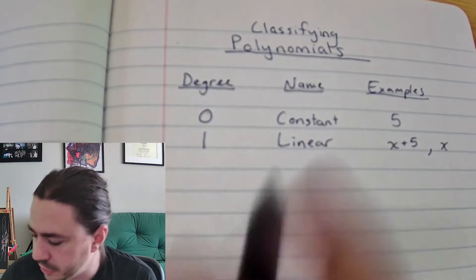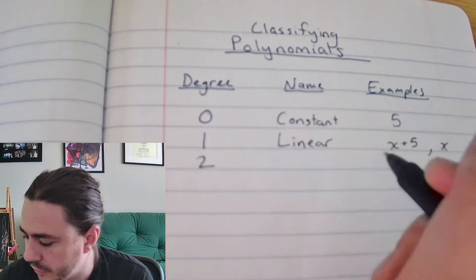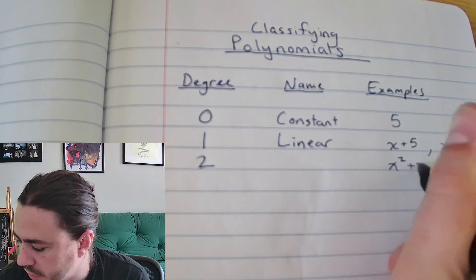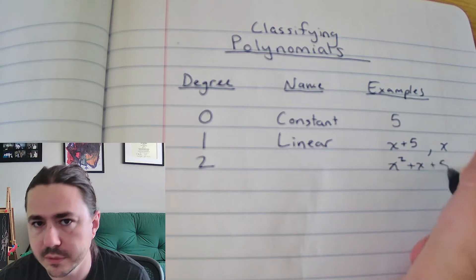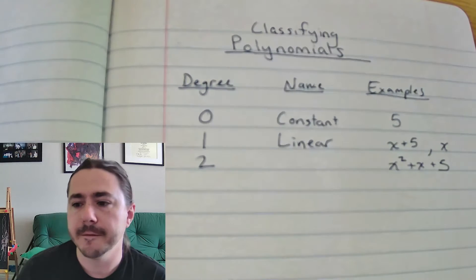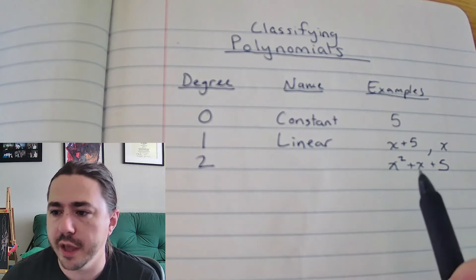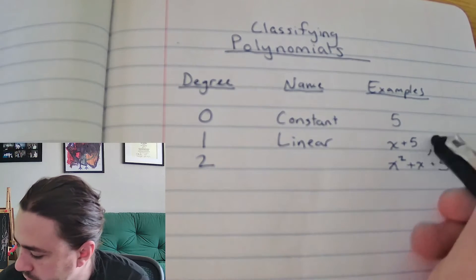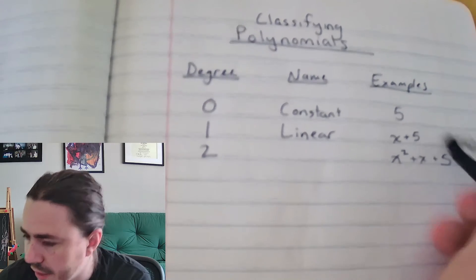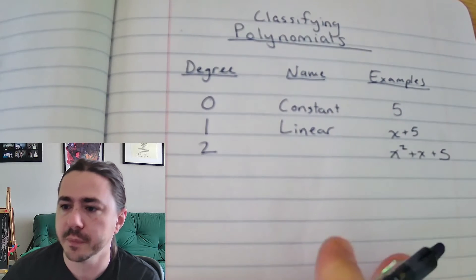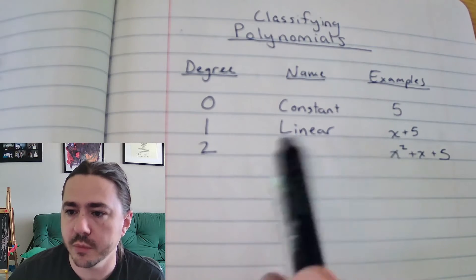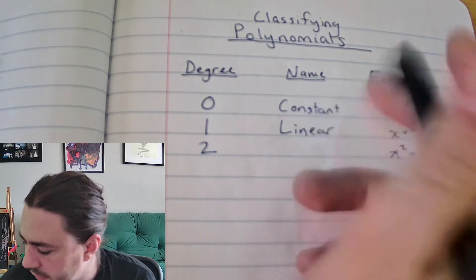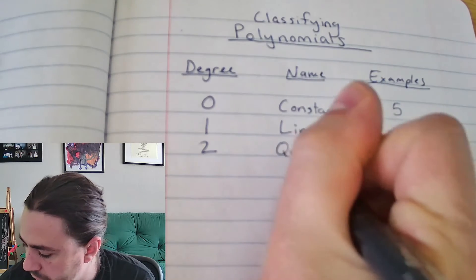You'll have a degree 2 polynomial if you have an expression where the largest exponent is 2, like x squared plus x plus 5. Anytime you've got x squared — when the degree is 2 — it means it's quadratic. That's the name of this polynomial: it's a quadratic polynomial.